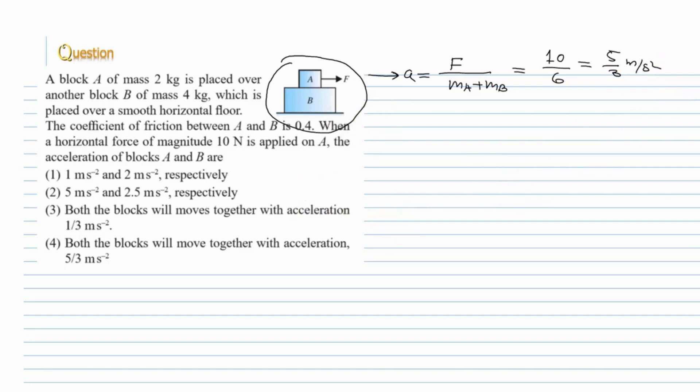Now, let us draw the free body diagrams of the blocks. This is block A. In block A, external applied force is capital F in the forward direction. Weight in the downward direction, this is MaG. Normal reaction on A in the upward direction and friction force which is responsible for opposing the relative sliding will act in the backward direction.